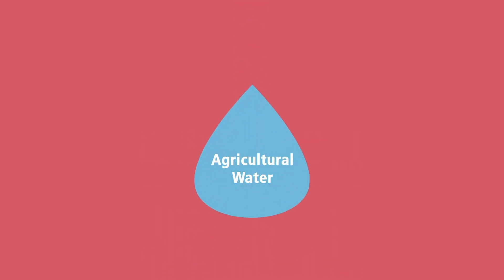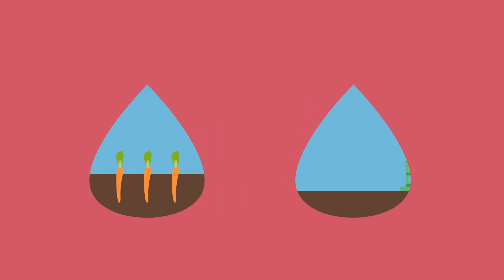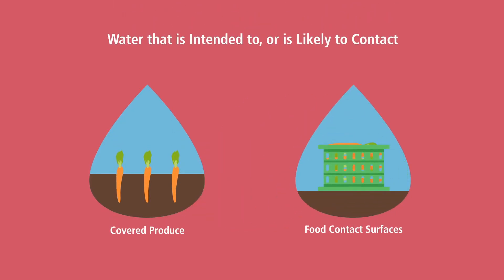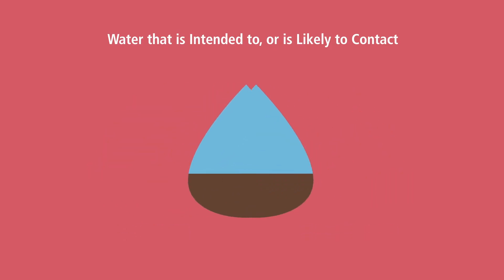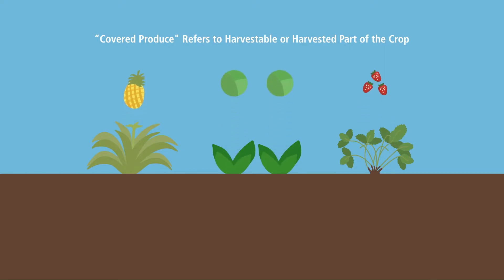The Produce Safety Rule defines agricultural water as water used in covered activities on covered produce where water is intended to or is likely to contact covered produce or food contact surfaces. Covered produce is produce subject to the requirements of the Produce Safety Rule. The term covered produce refers to the harvestable or harvested part of the crop.